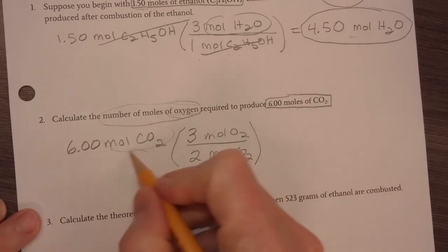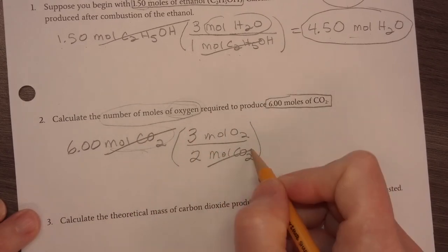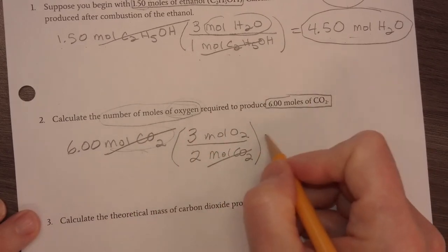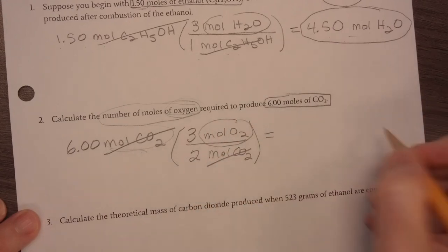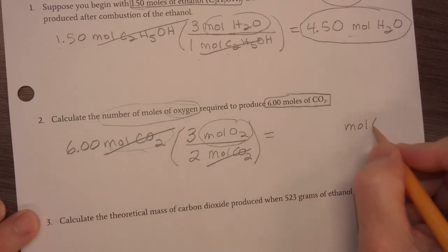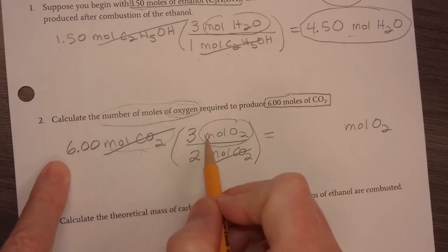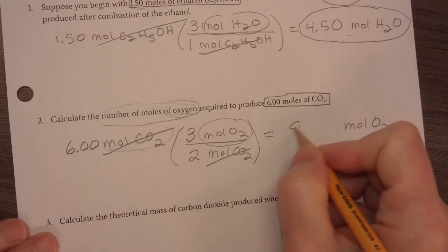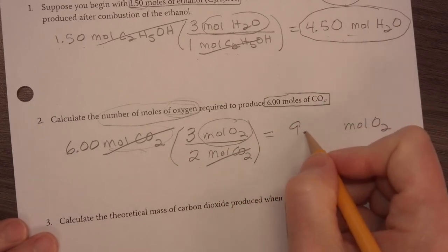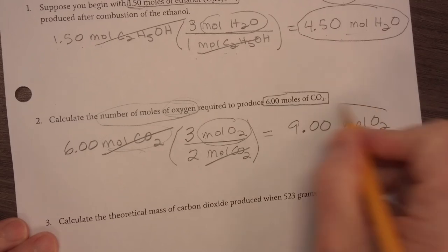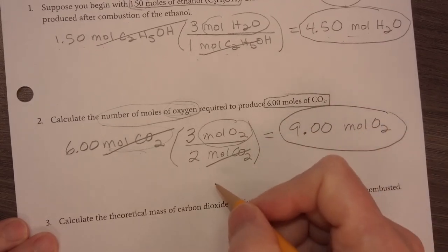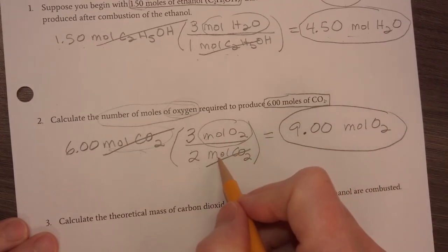So I have my moles of CO2 can divide out. So now my answer is going to be moles of oxygen. I have 6 times 3 is 18 divided by 2 is 9. Now, remember, I have to have three significant figures, so it's 9.00. All right. This was worth two points. One for the mole ratio, one for the answer.